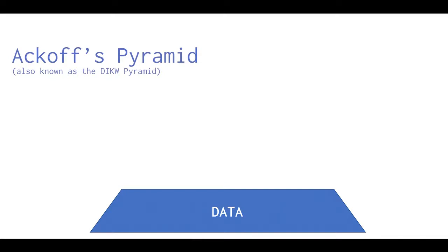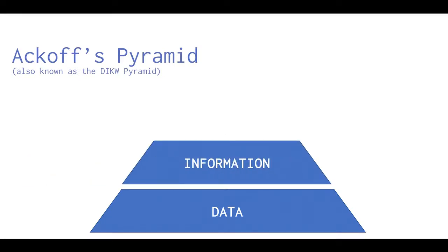Information is not knowledge. Let's have a look at this image called the Ackoff pyramid. At the bottom of the pyramid you have data. Data is important, very important. But if you don't work with it, if you don't analyze it, you don't have information. So there is a further step — you have data and you want to have information, so you need to work with your data. Information is data well organized.